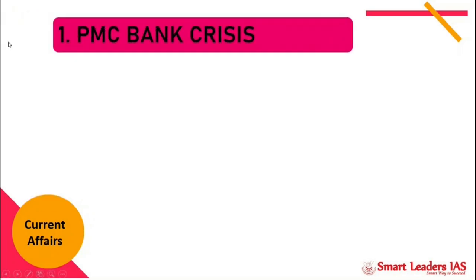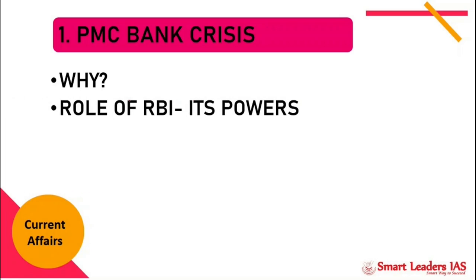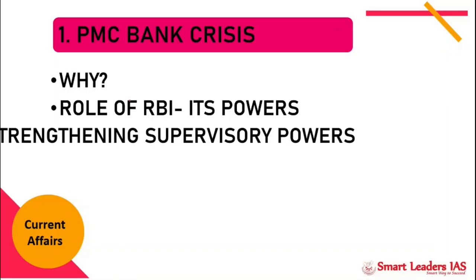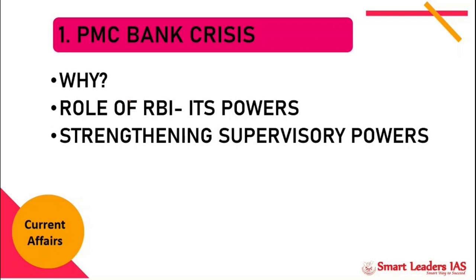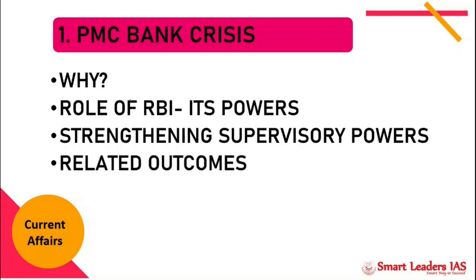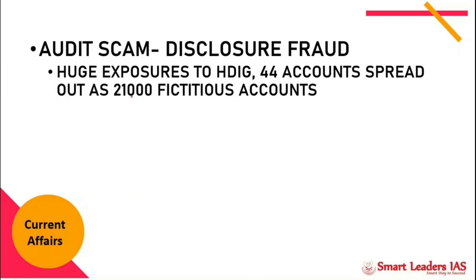The first topic is the PMC bank crisis. We are not going to discuss the A to Z of what happened, rather we will limit our discussion to the nature of the crisis, what action the RBI took and whether it had the propriety to do so, from where it draws its power, what regulatory lapses were present, what supervisory powers the RBI has, and the follow-up actions taken post the PMC crisis.